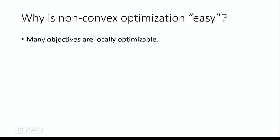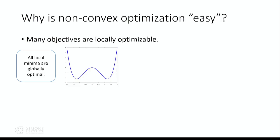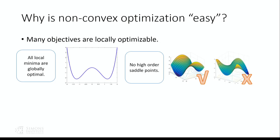What do I mean by locally optimizable? These objectives have two very nice properties. The first property is that all local minima are equivalent — they have the same function value and they are all globally optimal. As you can see in this function, we have two local minima and they are equivalent. In practice, this phenomenon usually happens because of some symmetry within the objective function. For this particular function, it's clear the function is symmetric with respect to reflection over the y-axis.